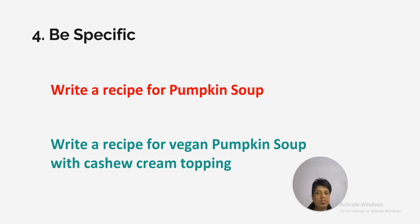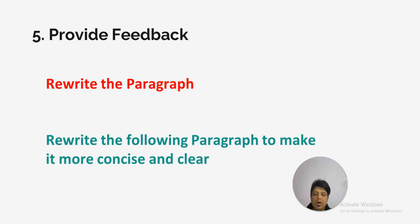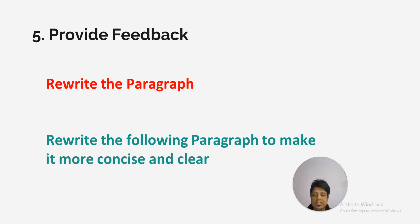The fourth technique is to be specific. For example, instead of 'write a recipe for pumpkin soup', write 'write a recipe for vegan pumpkin soup with cashew cream topping.' Now, if you get an answer that is not as per your expectation, provide feedback — but also very clear feedback. For example, instead of just 'rewrite the paragraph', write 'rewrite the following paragraph to make it more concise and clear.' This feedback will help ChatGPT give you exactly what you want.